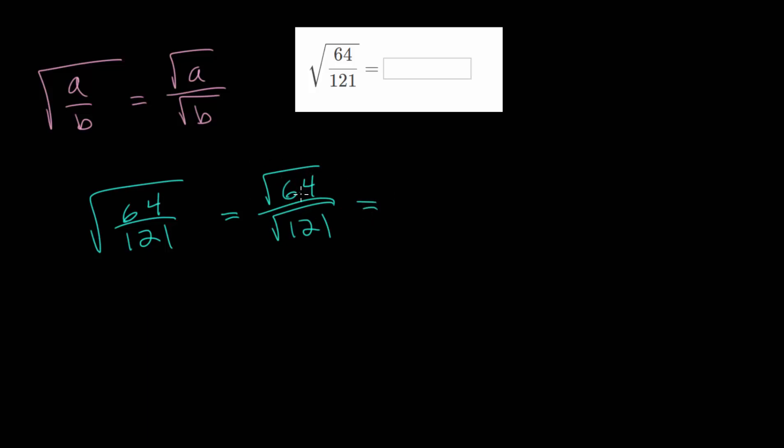And so what number multiplied by itself gives you 64? That is 8. And what number multiplied by itself gives you 121? That is 11.